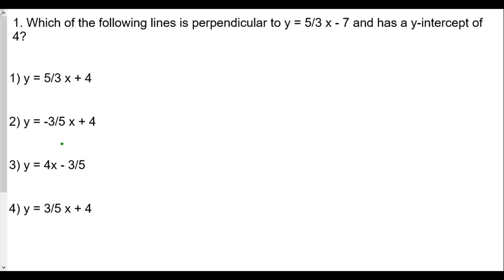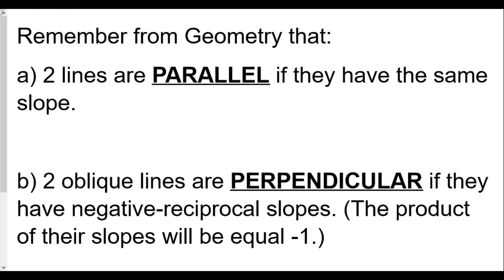Here is our first question: which line is perpendicular to y equals five-thirds x minus seven and has a y-intercept of four? We need to go back to our geometry notes and talk about parallel and perpendicular lines. Two lines are parallel if they have the same slope in y equals mx plus b form. Two oblique lines — meaning slanted, neither horizontal nor vertical — are perpendicular if they have negative reciprocal slopes, meaning the product of the slopes equals negative one.